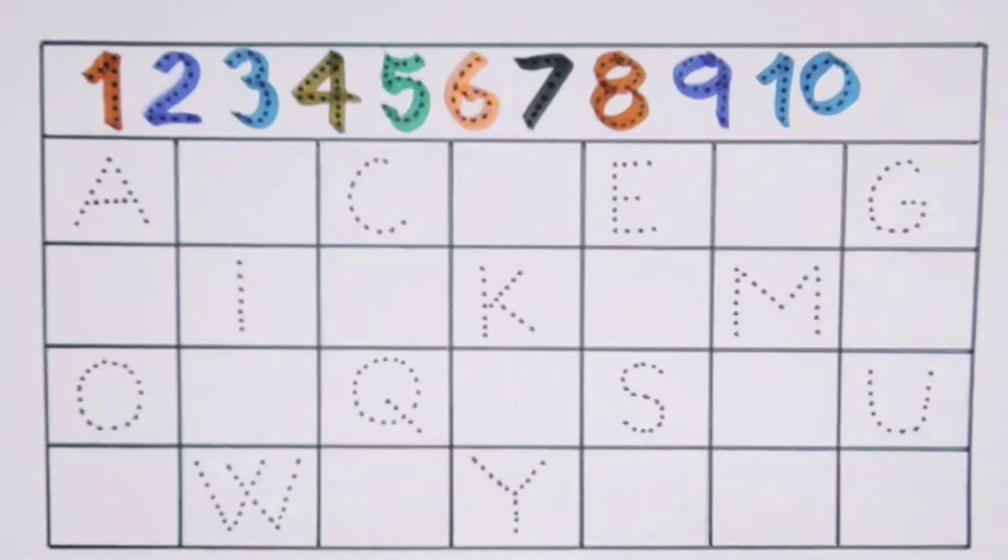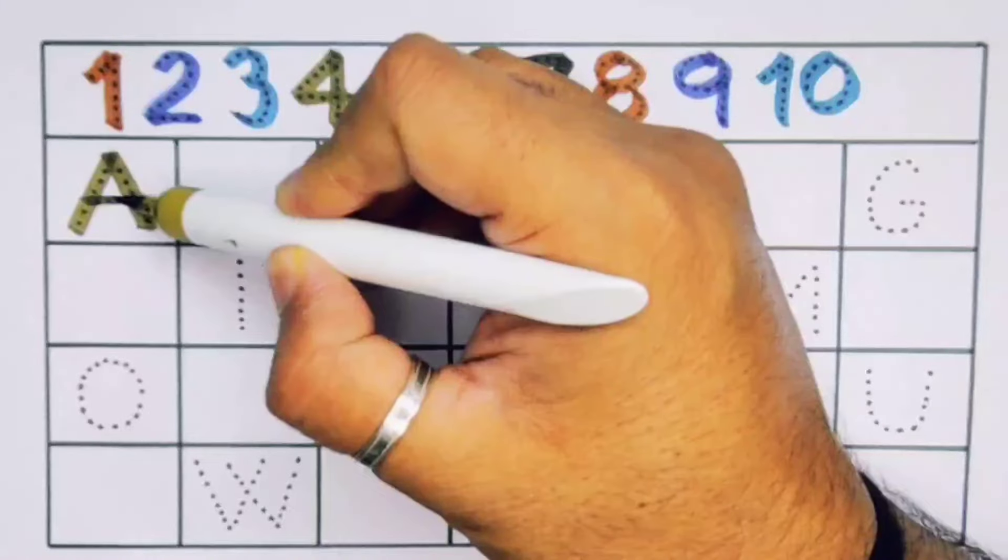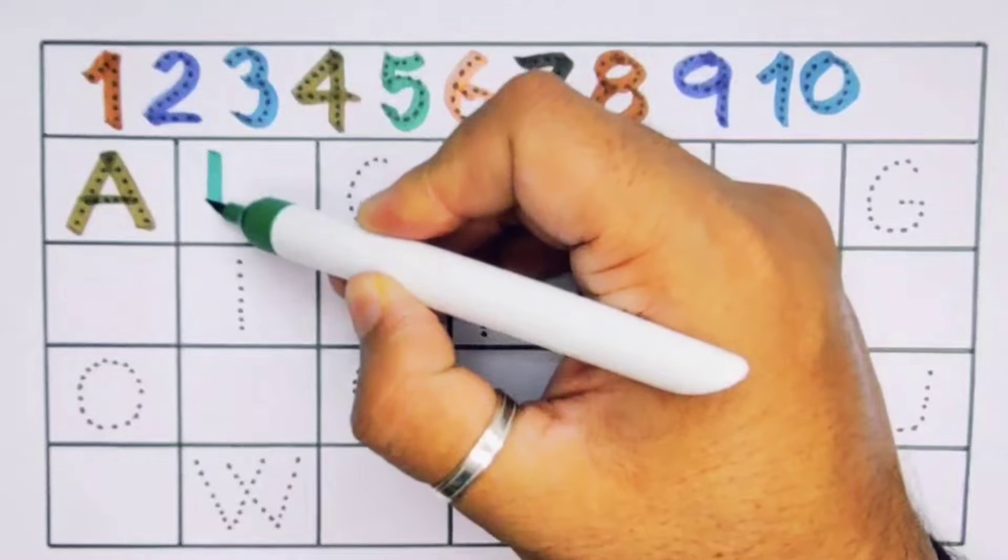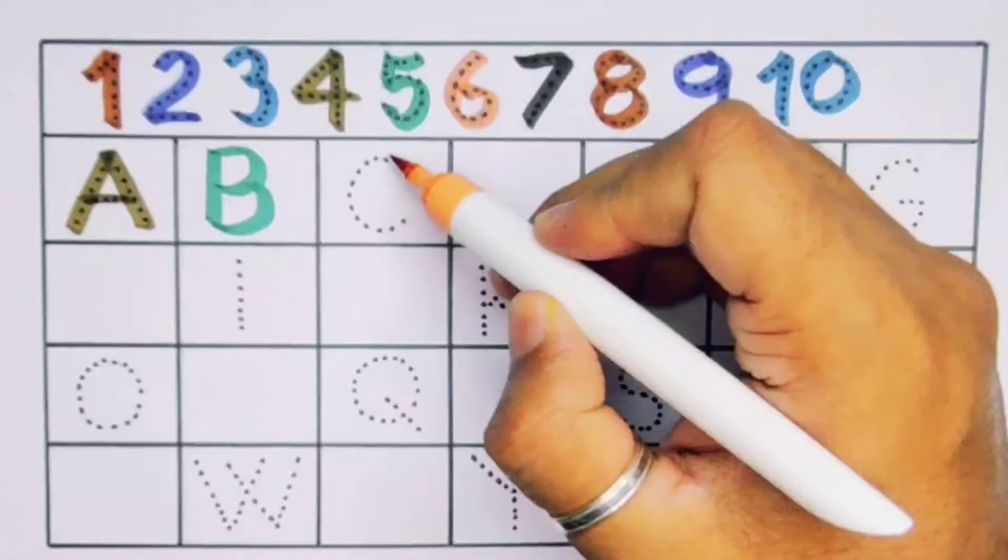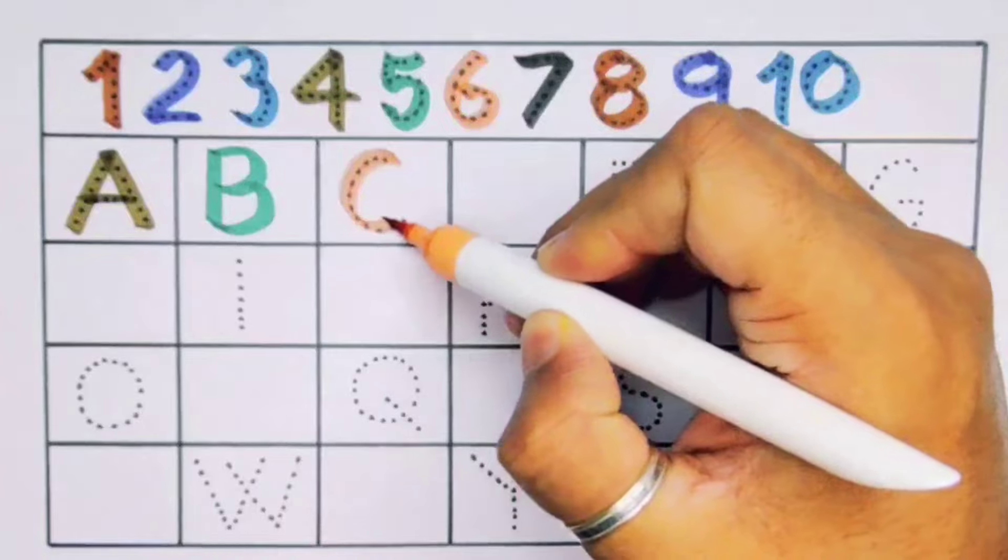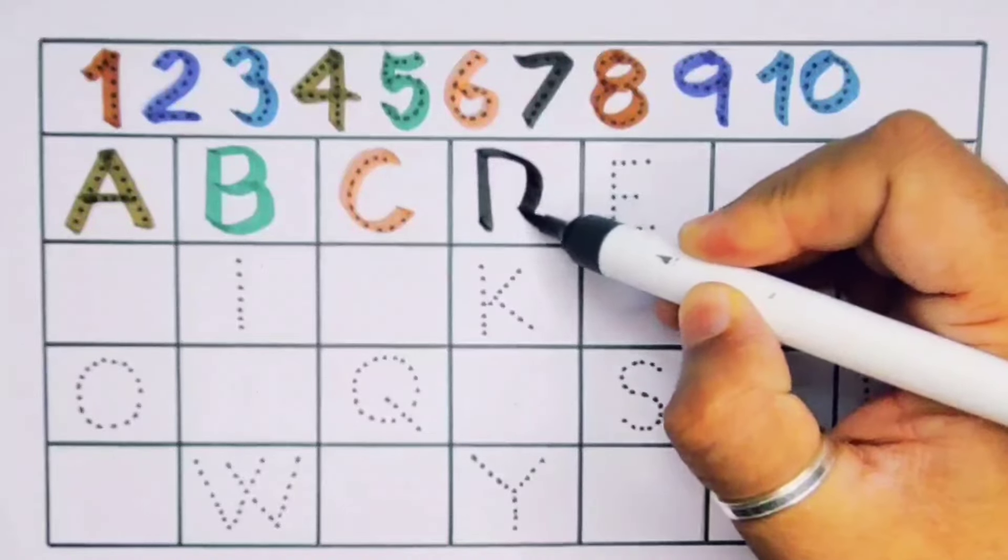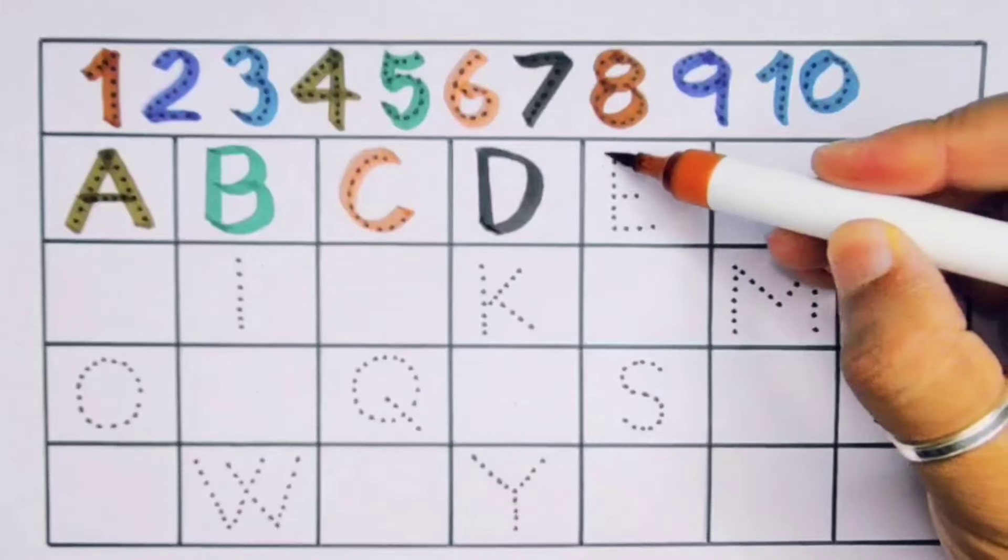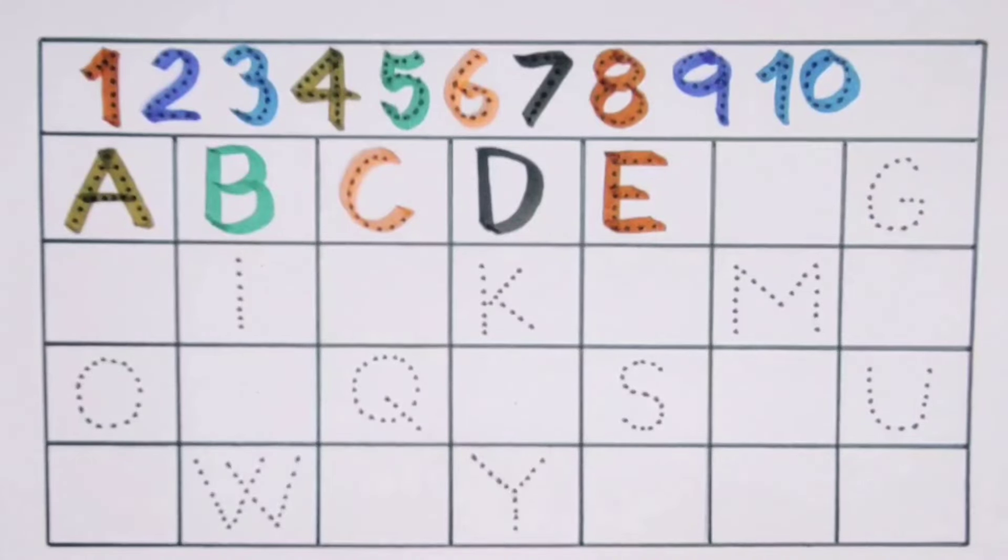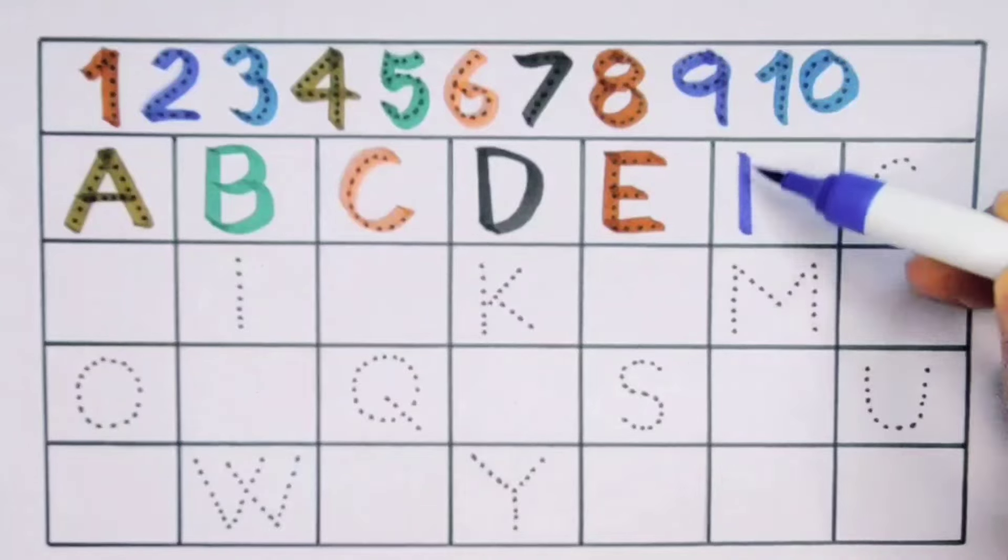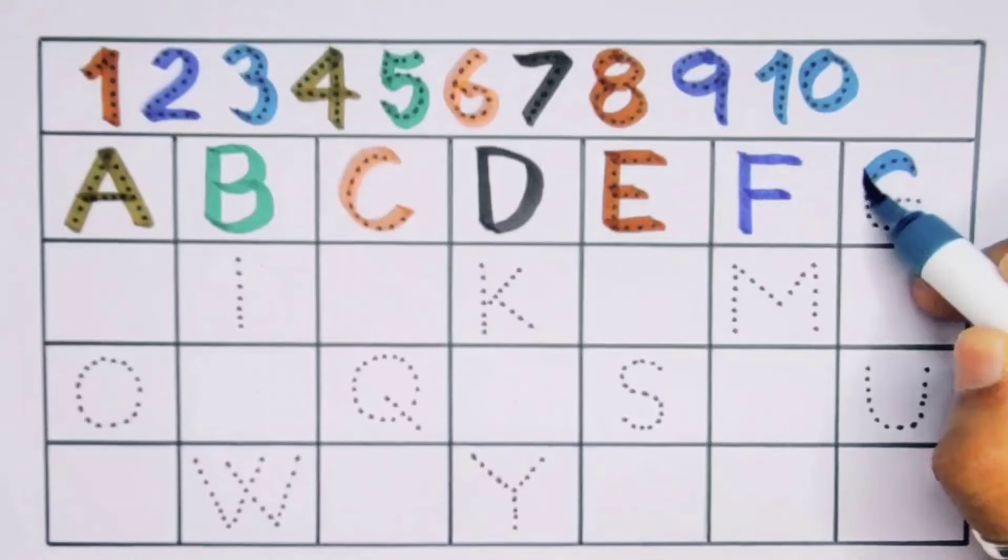Now let's learn the alphabet A to Z. A, A for aeroplane. Next, B, B for butterfly. Next, C, C for car. Next kids, it's D, D for dolphin. Next, E, E for elephant. Next, F, F for fish. Next, G, G for giraffe.